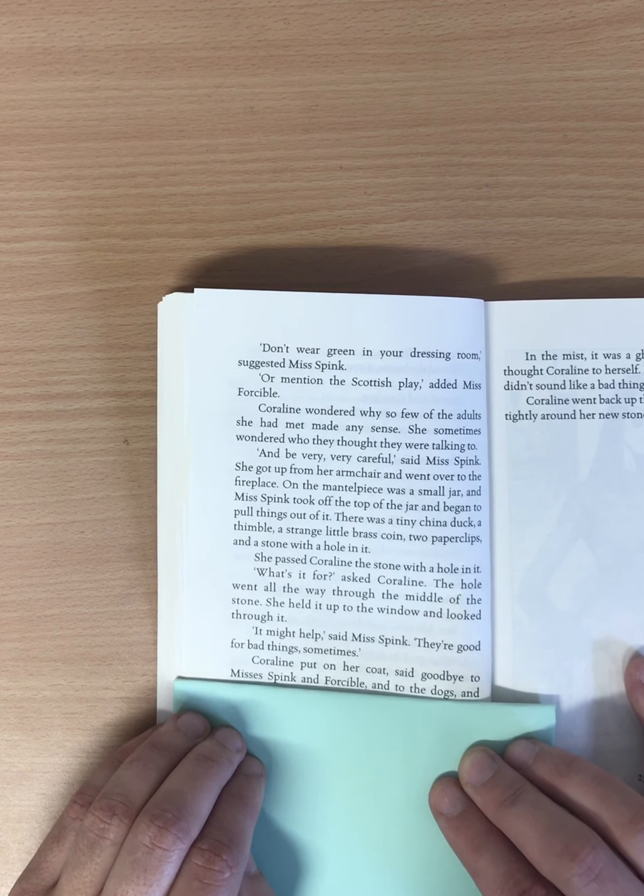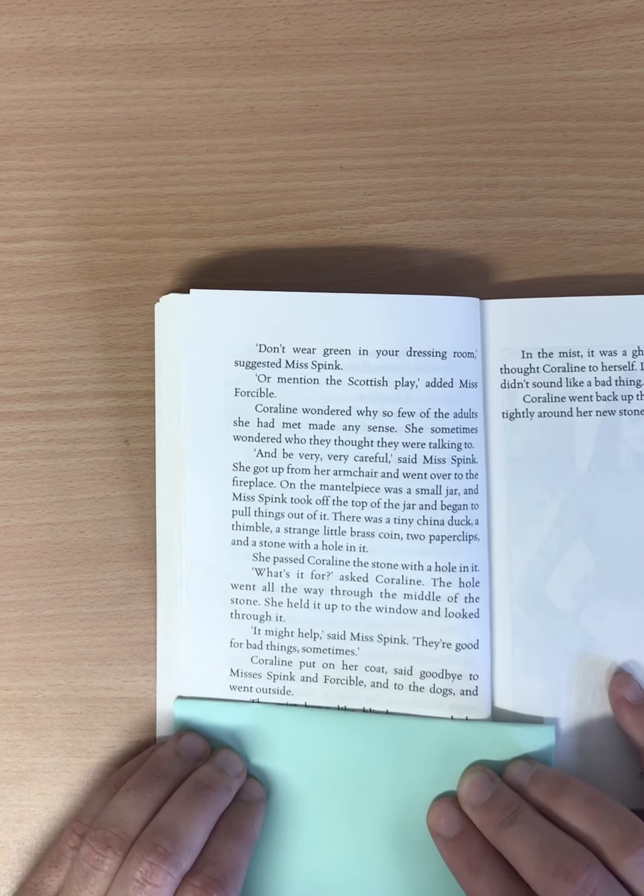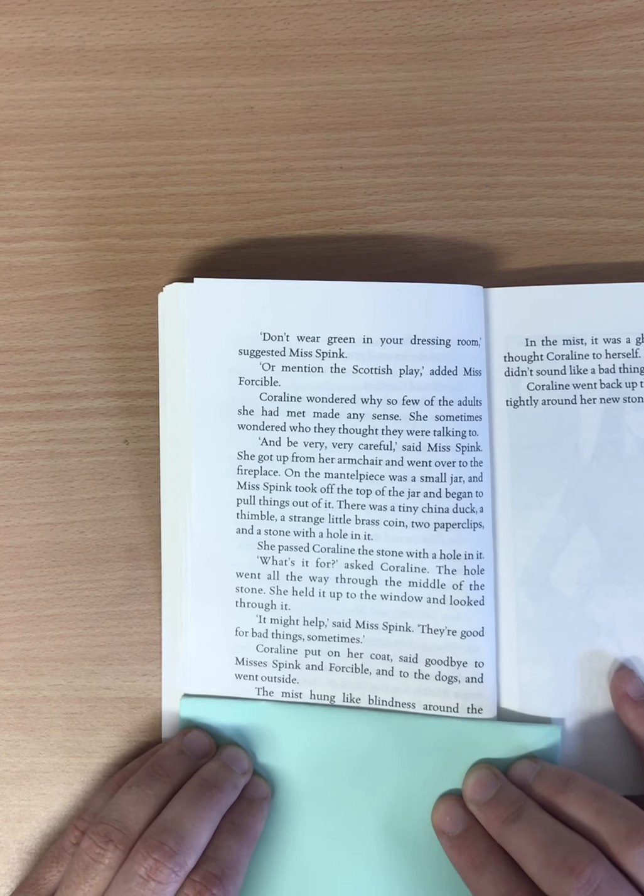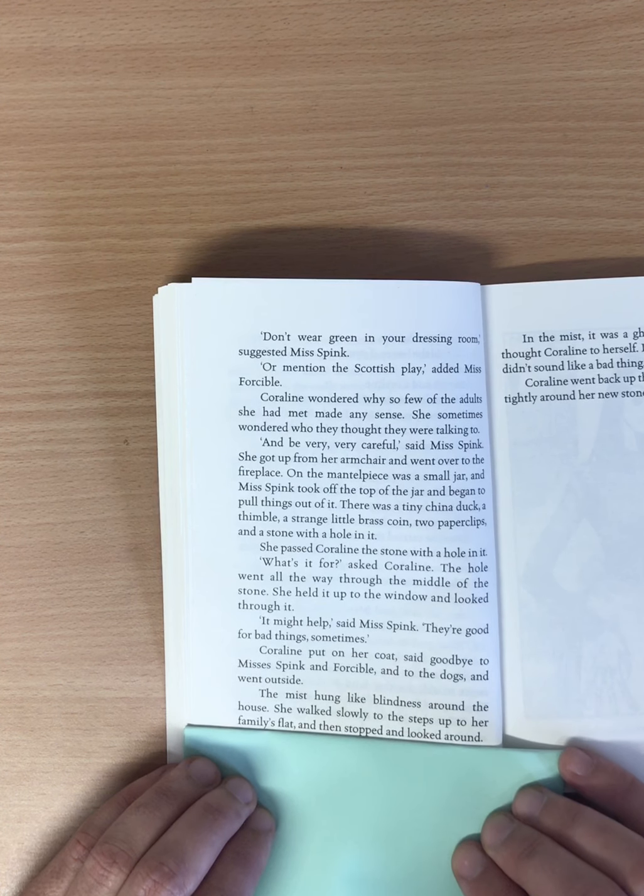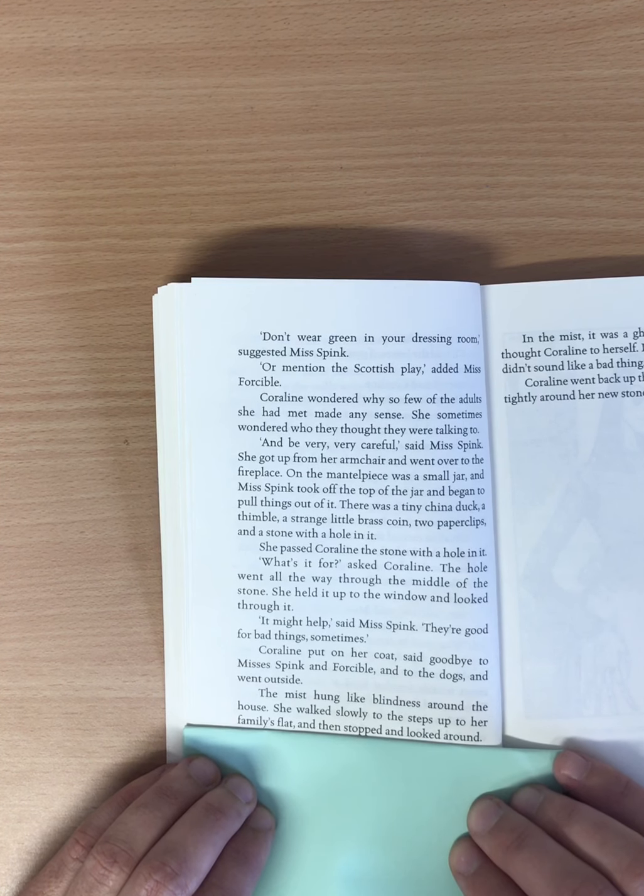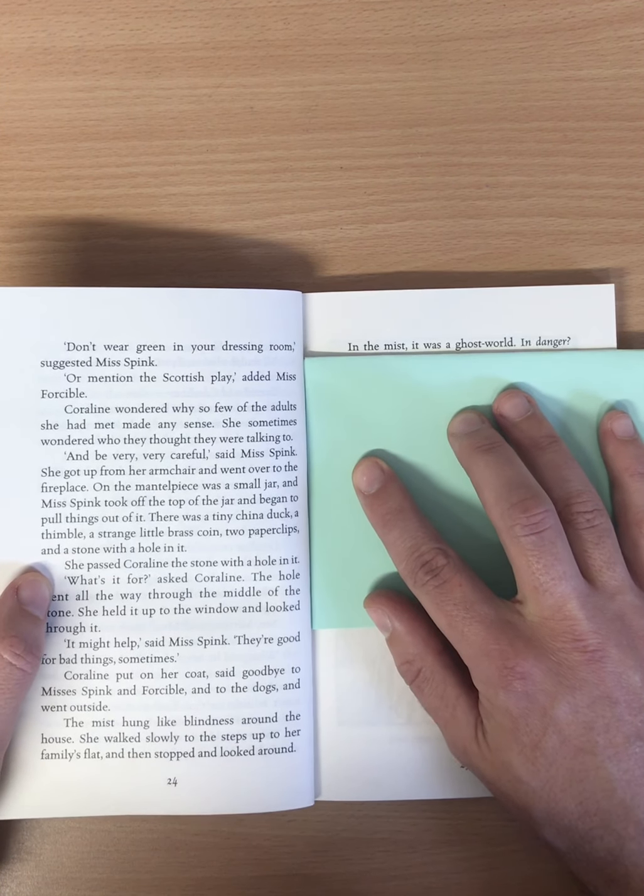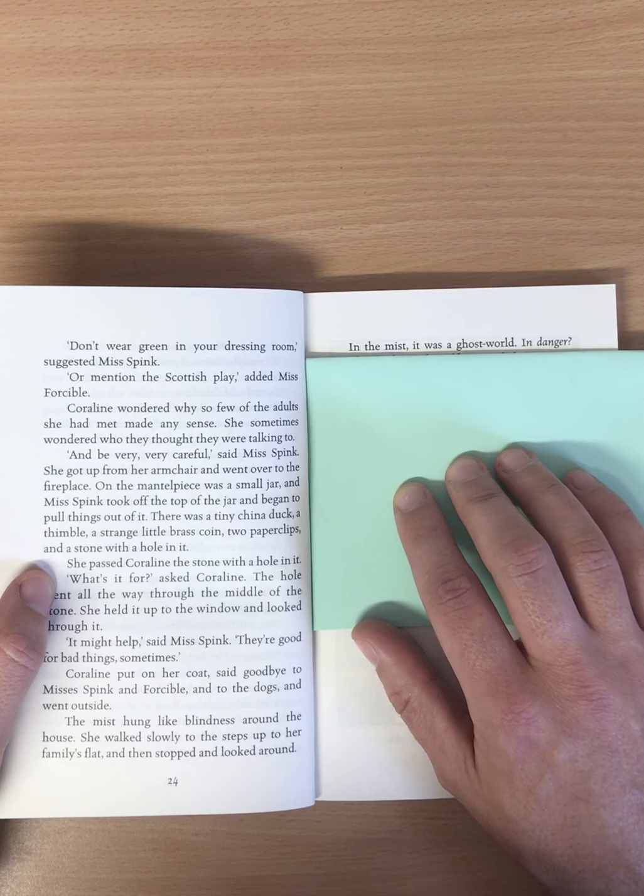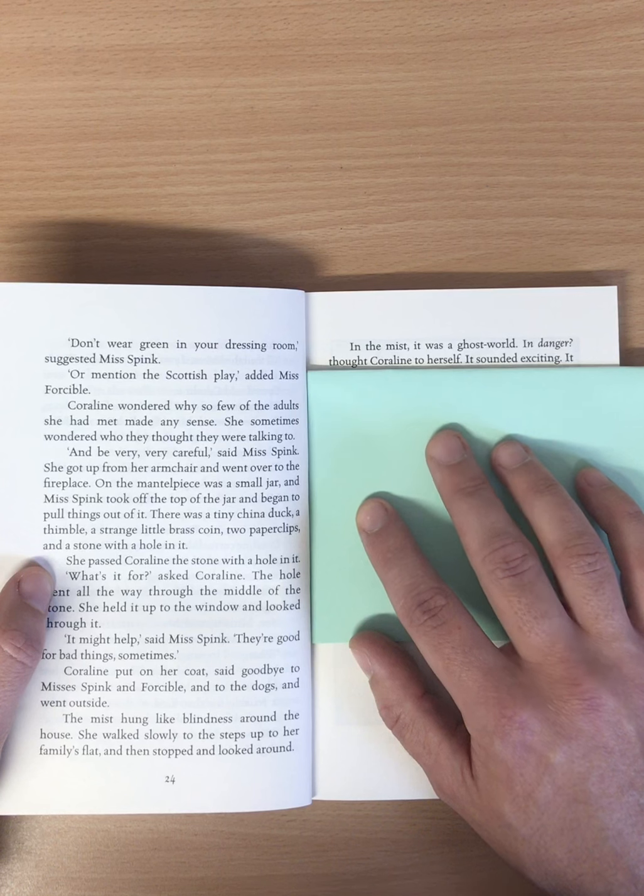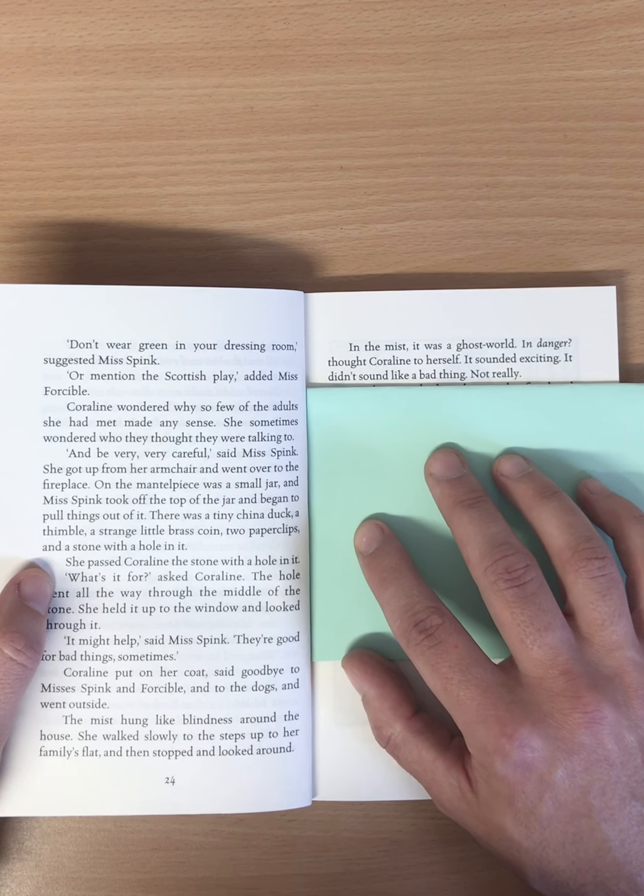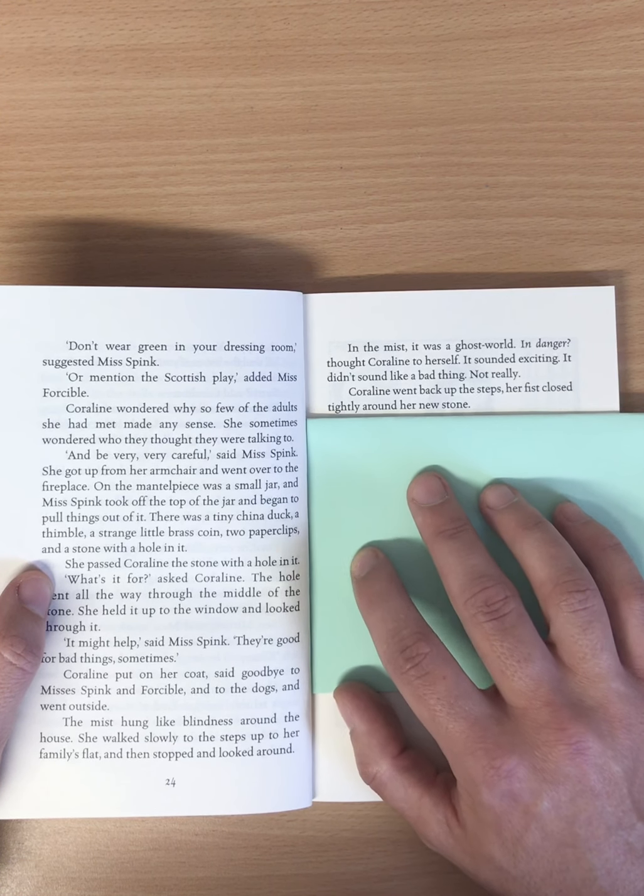Coraline put on her coat, said goodbye to Miss Spink and Forcible, and to the dogs, and went outside. The mist hung like blindness around the house. She walked slowly to the steps, up to her family's flat, and then stopped and looked around. In the mist, it was a ghost world. In danger, thought Coraline to herself. It sounded exciting. It didn't sound like a bad thing. Not really. Coraline went back up the steps, her fists closed tightly around her new stone.